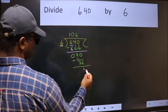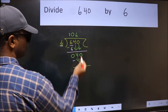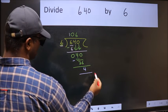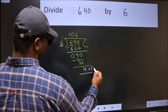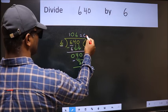We get 4. No more numbers to bring down, so we stop here. This is our remainder, and this is our quotient.